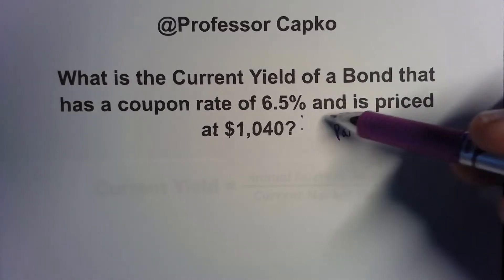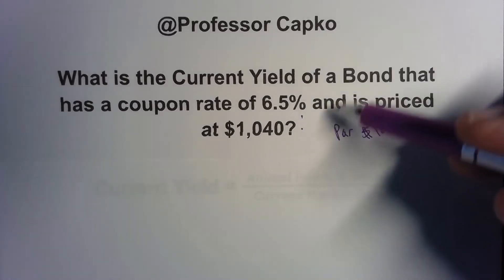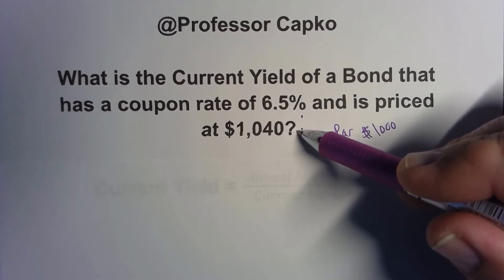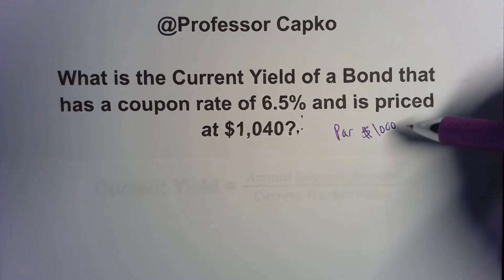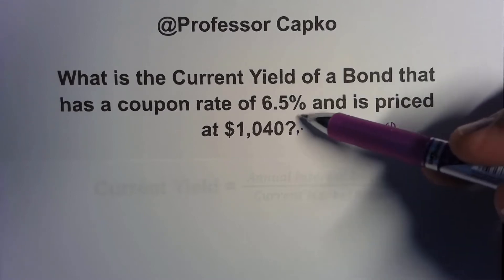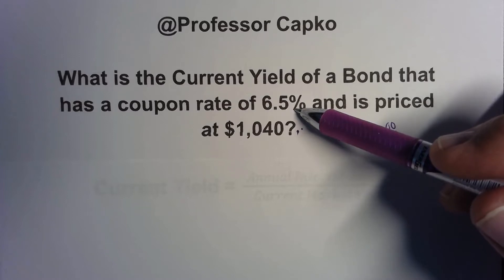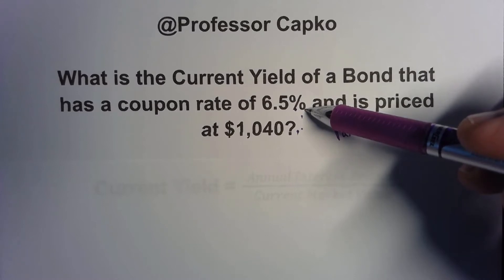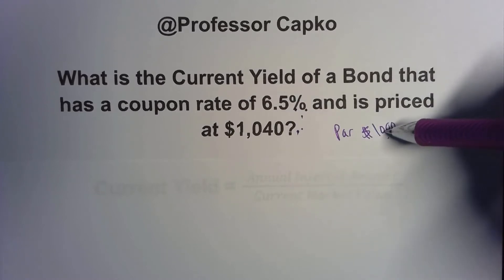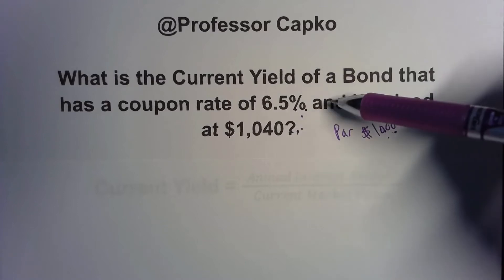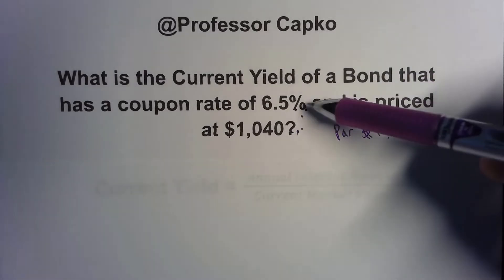But in the meantime, it's going to be paying 6.5% interest. We want to find out what the real interest rate is — the current yield — if we have to pay more than the par value, in this case $1,040. If we're paying more than par value, do we expect the yield to be lower or higher than the coupon rate, which is the stated rate? Put it down in the comments if you know. The actual real rate is going to be lower than this, because if we just bought it for $1,000 we'd be getting 6.5%, but if we pay more than $1,000, the interest we're receiving is less than the coupon rate.